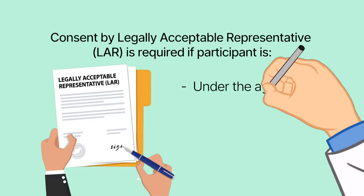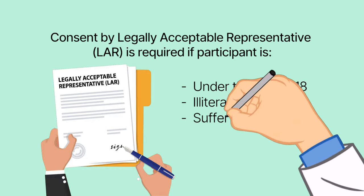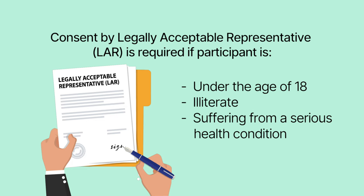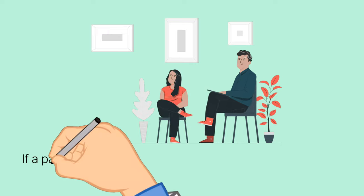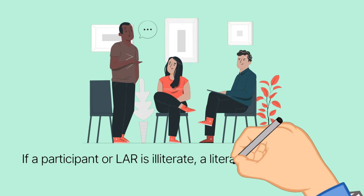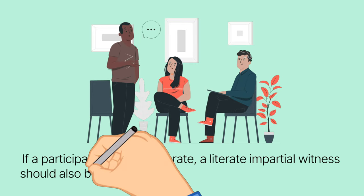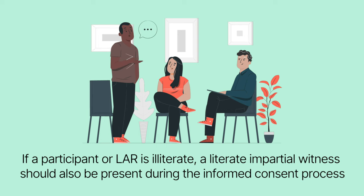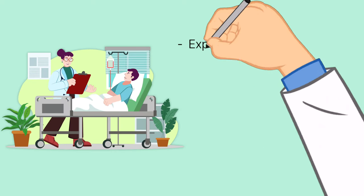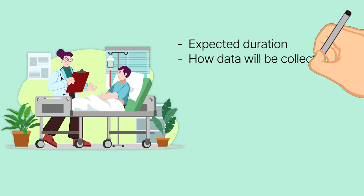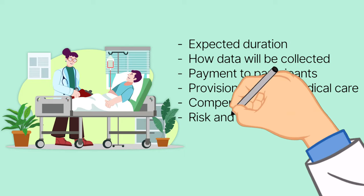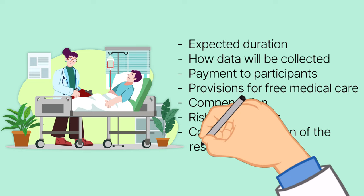Consent by LAR is required if the participant is under the age of 18, illiterate, or suffering from a serious health condition. If a participant or their representative is illiterate, an impartial literate witness needs to be present while consent is being sought. The informed consent form must clearly state that the project is for research purposes only and must contain all project-related information.